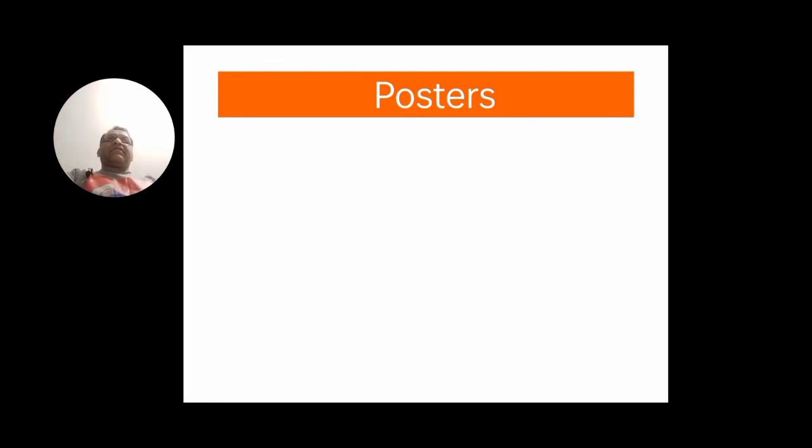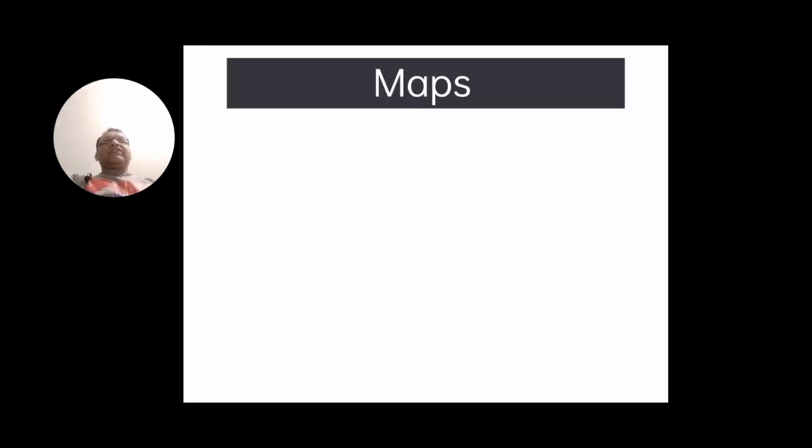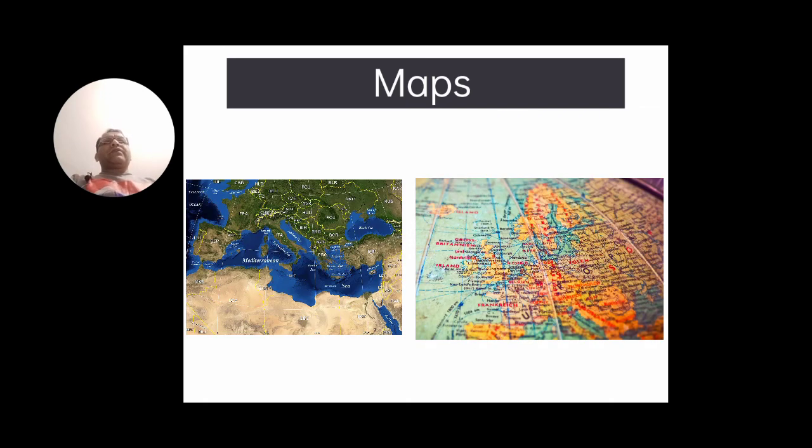The next one is maps. Maps are also very effective teaching tools, especially for social studies, history, and geographic classes. Maps are displayed in the classroom to locate places, to show rivers, mountains, cities, and countries. Teachers teach children to read maps.